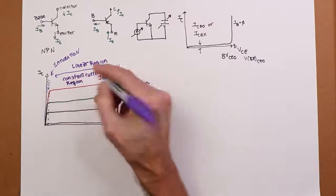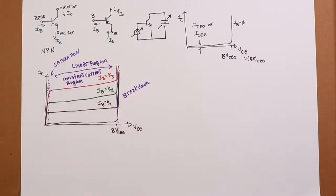This is where we're going to operate the transistor if we're talking about something like a linear amplifier, like a preamp or a power amp, something like that.